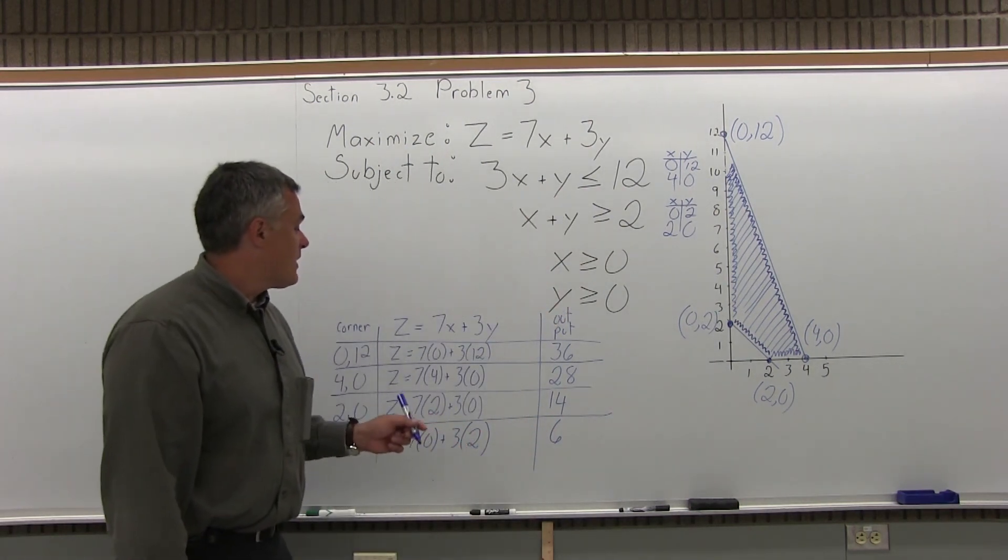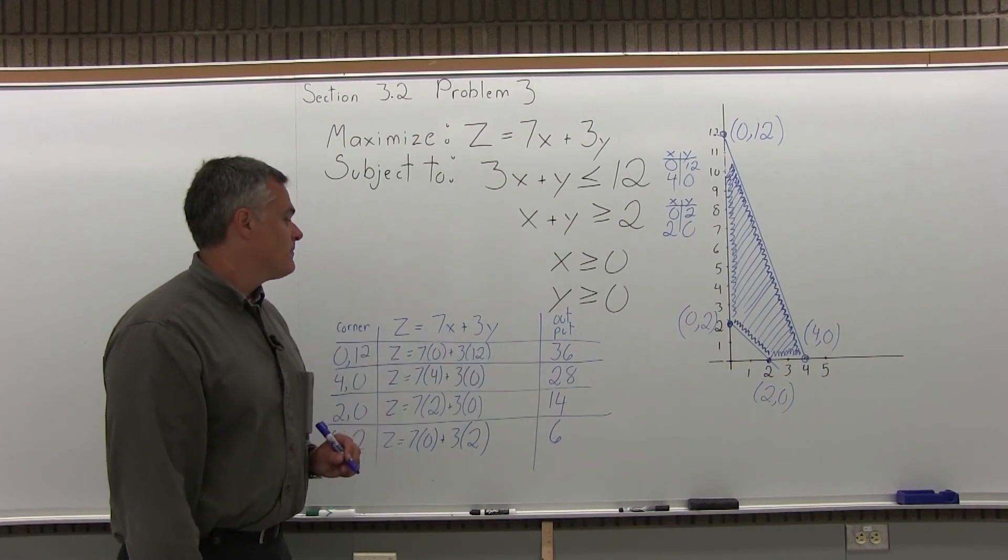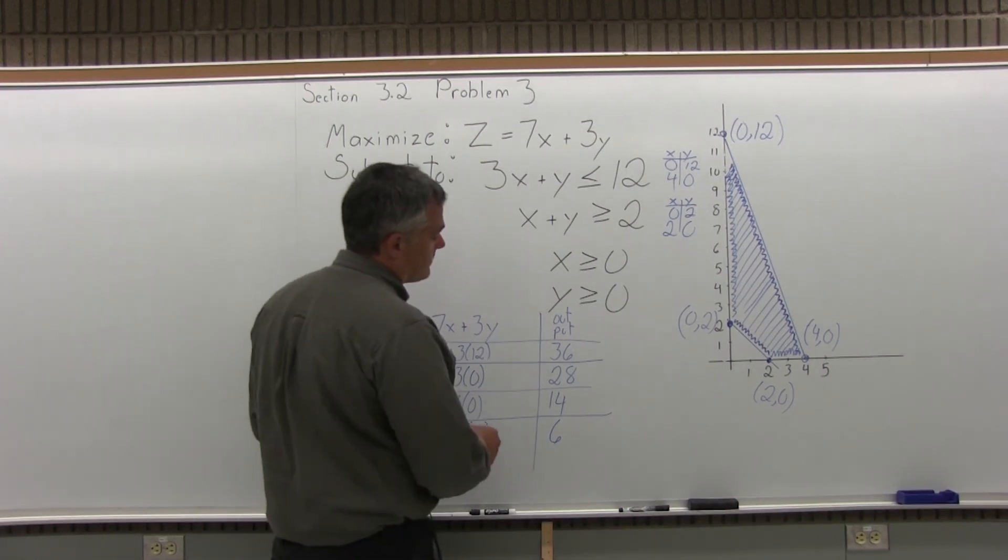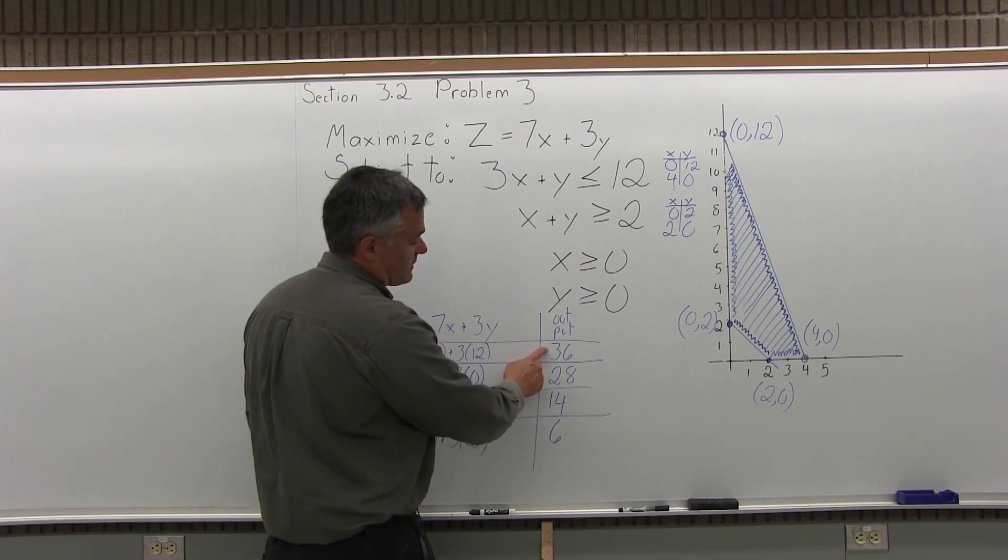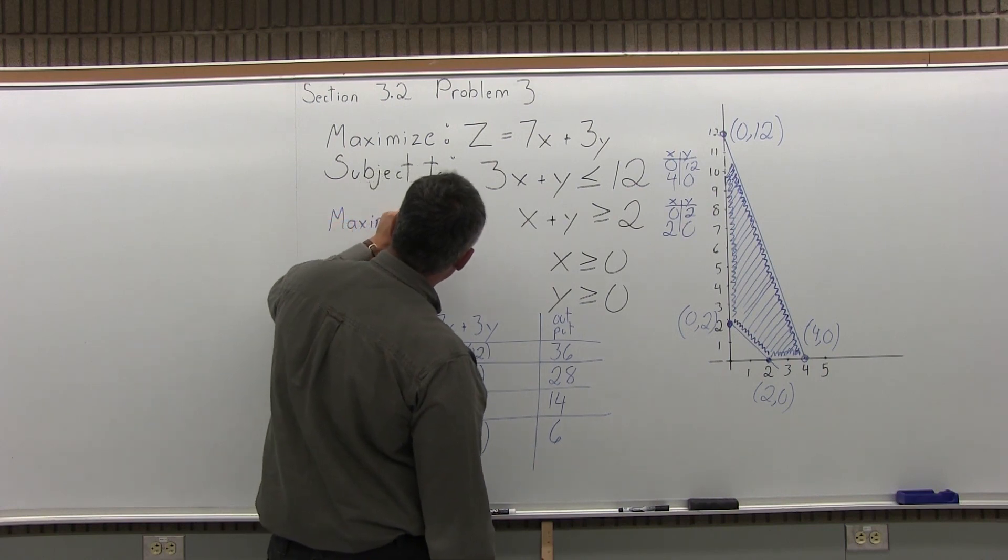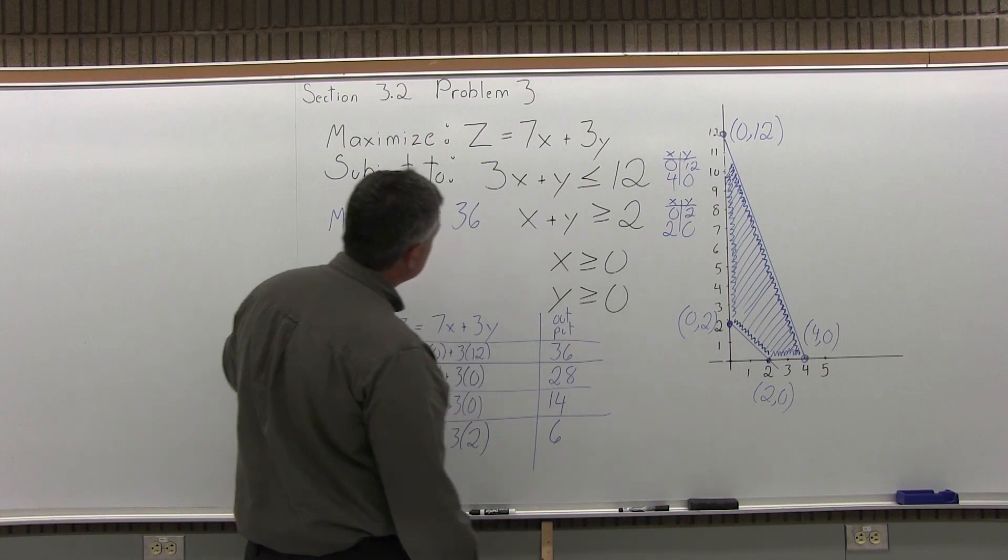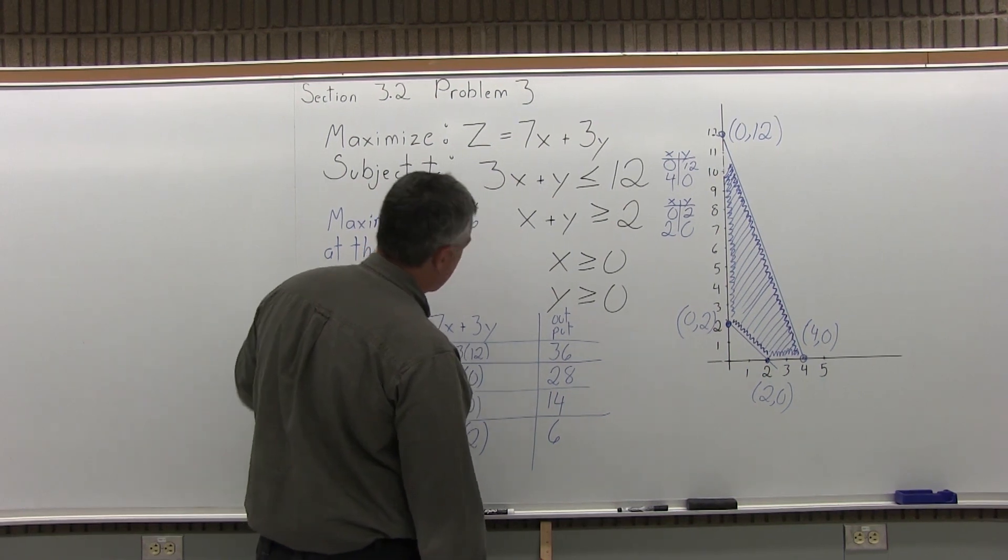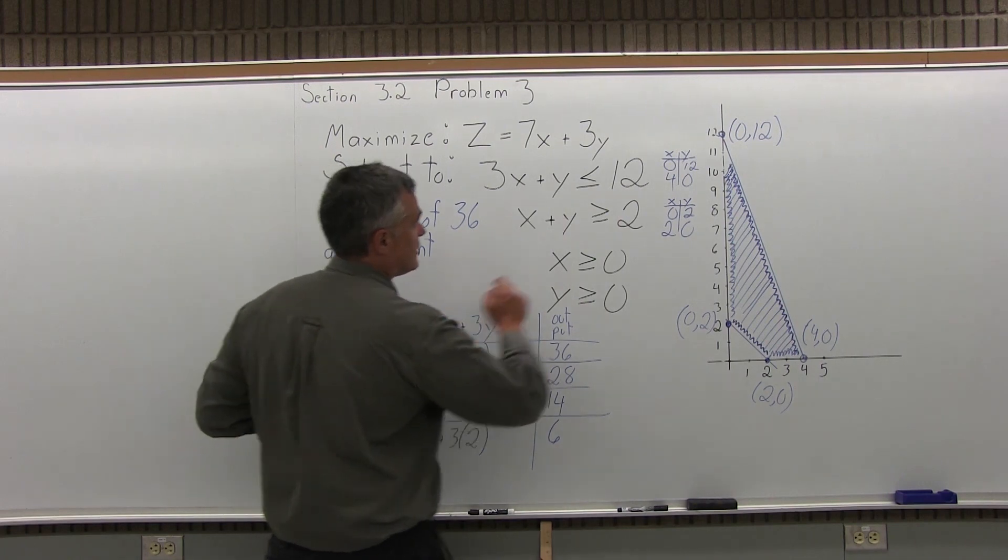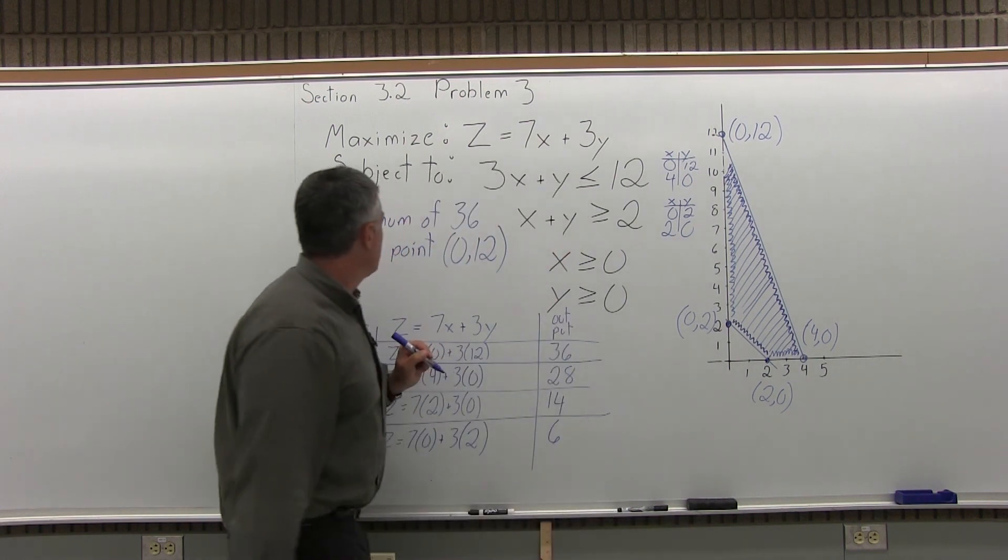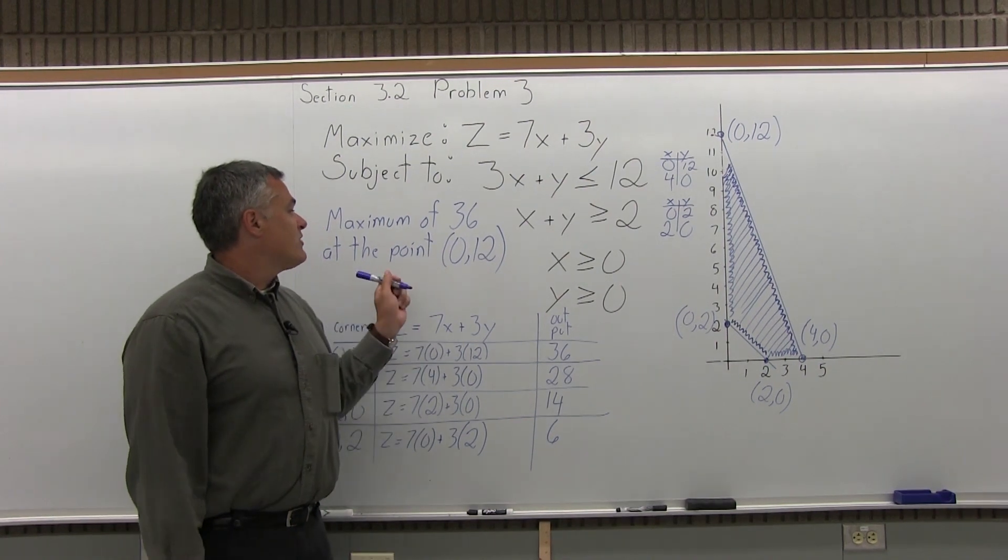So step 3 of my four-part process is fill in the chart that we just filled in. And the final step, step 4, is state your solution. Now we want to maximize in this problem, because some could say minimize. This is a maximize. Our choices for the output are 36, 28, 14, or 6. Well the biggest output is 36. So when you state your solution, we will say maximum of 36, and you have to say where you got the 36 from. So underneath we'll put at the point. Now that maximum output of 36 occurred at the corner point 0, 12, at 0, 12. The answer to problem number 3 is we have a maximum of 36 at the point 0, 12.